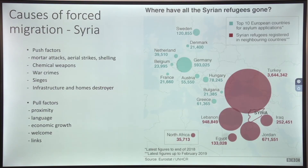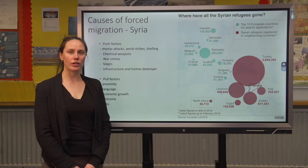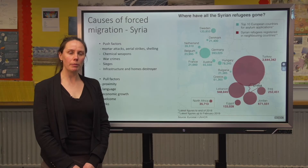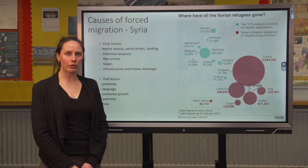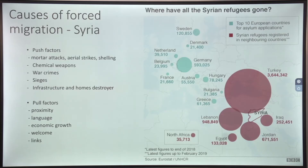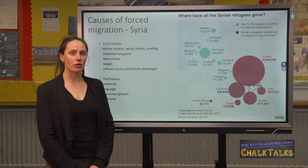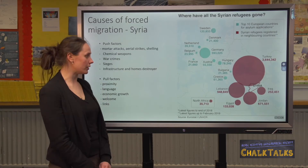Your second case study should be an example of forced migration, where people are forced to leave their country out of fear for their lives — maybe because of famine, natural disasters or war. One case study for forced migration is Syria, which has experienced a vicious civil war since 2011.